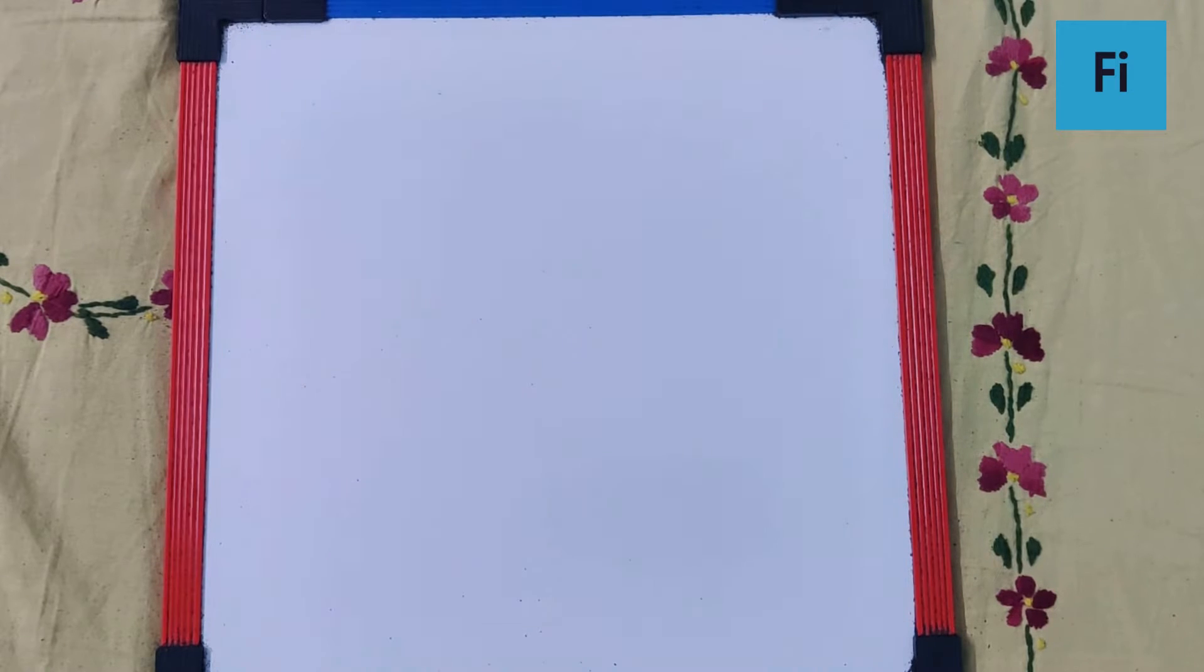The question says, a bubble in glass slab when viewed from one side appears at 5 cm and 2 cm from other side, then thickness of slab is.